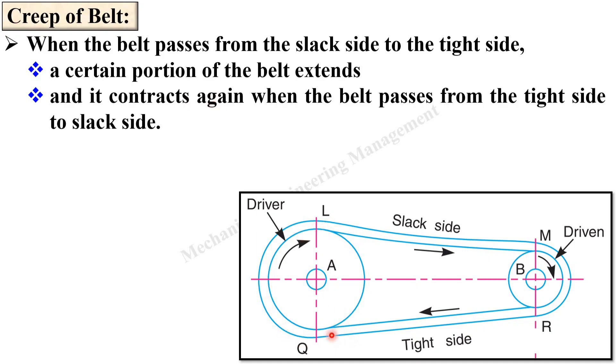That means from this side to this side. So when the belt passes from the tight side to the slack side it contracts again because this is the slack side so the length will be reduced a little bit. Due to these changes of length of belt on both sides, from here to here it will extend and from here to here it will contract.